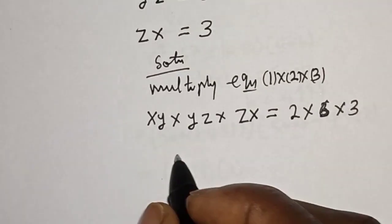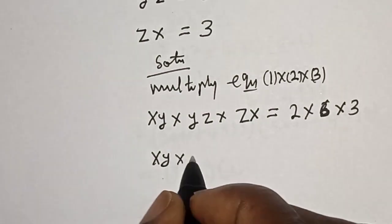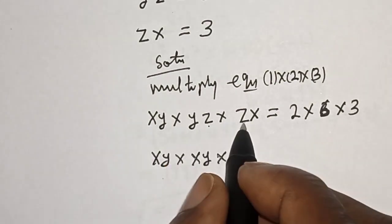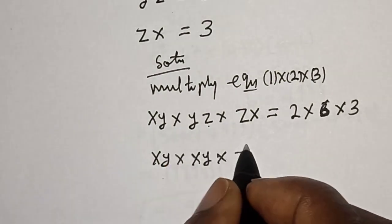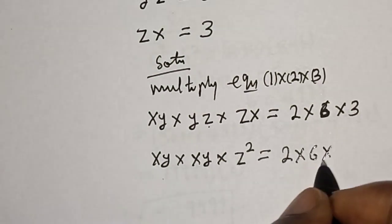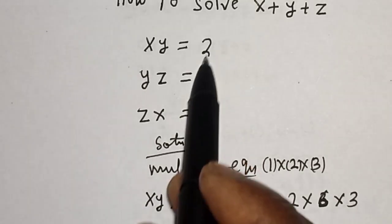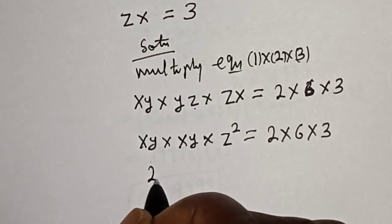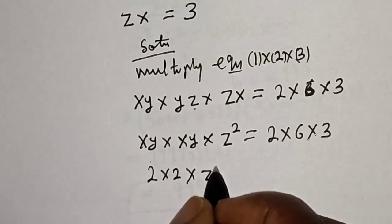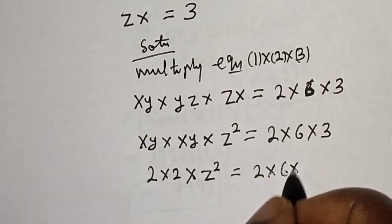Then, this gives us X·Y multiplied by Y·Z multiplied by Z·X, which equals (XYZ)² is equal to 2 multiplied by 6 multiplied by 3. Now, we know X·Y is equal to 2, so this becomes 2 multiplied by 2 multiplied by Z² equals 2 times 6 times 3.